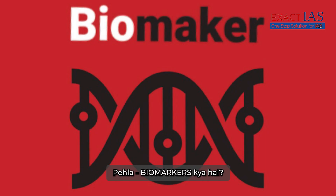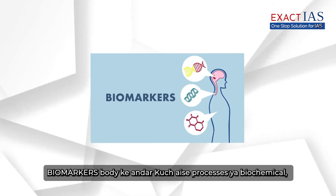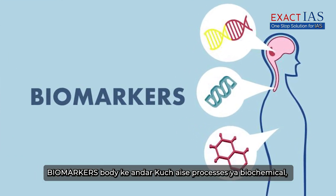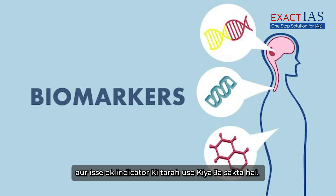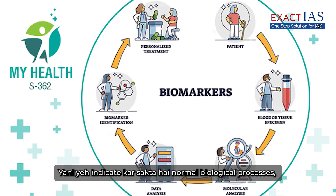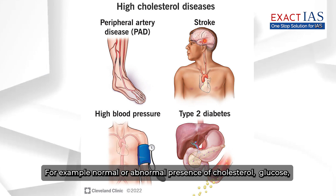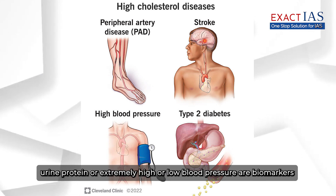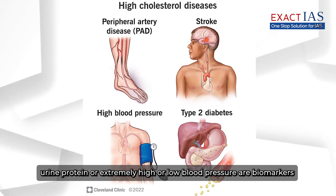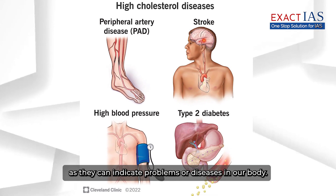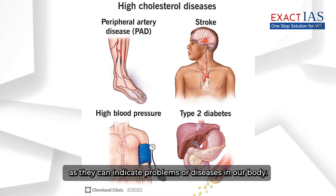Biomarkers are measurable indicators found in the body — including biochemical, molecular, or cellular alterations — that can indicate normal biological processes, or the presence and severity of diseases within the body. For example, normal or abnormal levels of cholesterol, glucose, urine protein, or extremely high or low blood pressure are biomarkers, as they can indicate problems or diseases in our body.